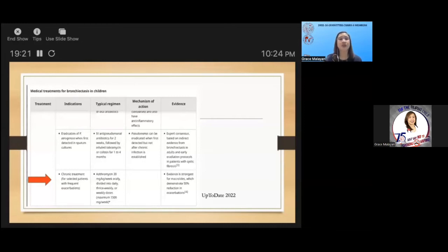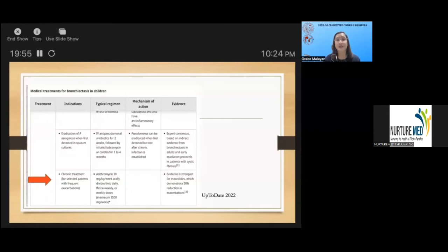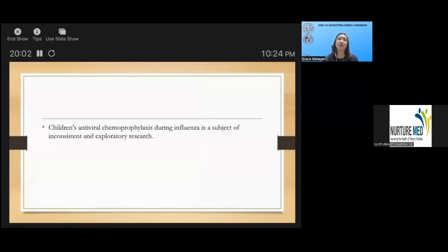For children who are chronically infected with Pseudomonas aeruginosa and who have frequent exacerbations, oral macrolide should be used as maintenance treatment: azithromycin at 30 milligrams per kilogram per week orally divided into daily, thrice weekly, or weekly doses with a maximum dose of 1500 milligrams per week. Evidence showed that macrolides demonstrated 50 percent reduction in bronchiectatic exacerbation. Regarding antiviral chemoprophylaxis during influenza, oseltamivir is strongly recommended to be started immediately within 36 hours of laboratory-confirmed influenza infection.